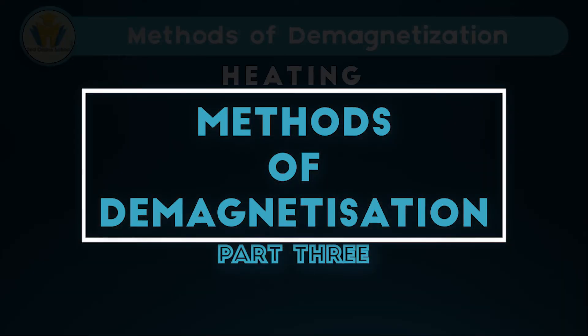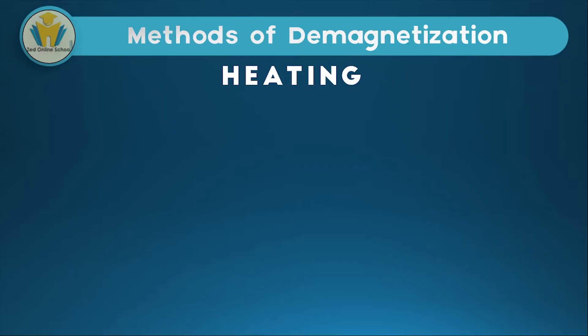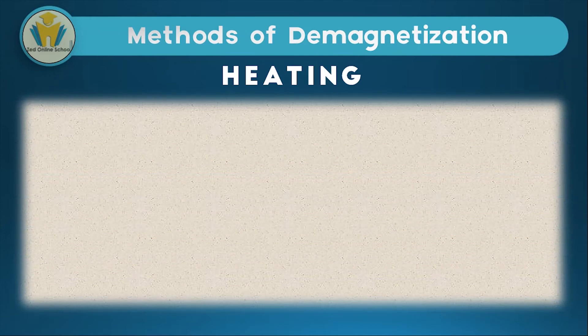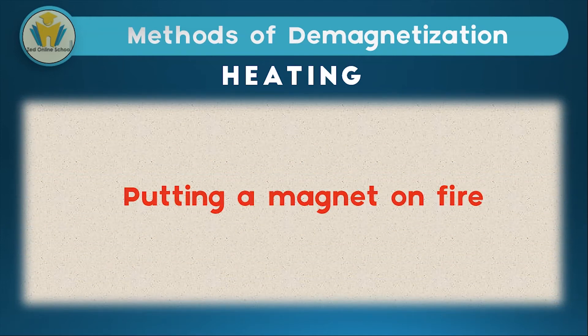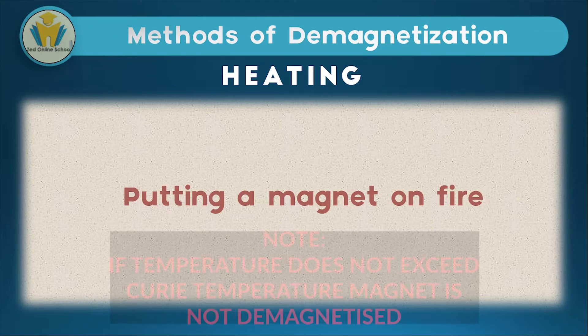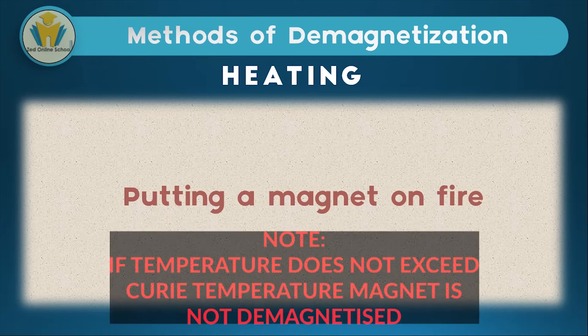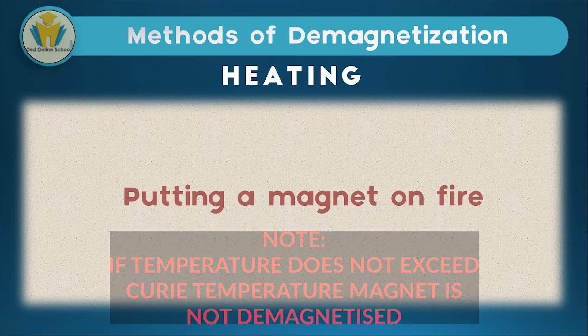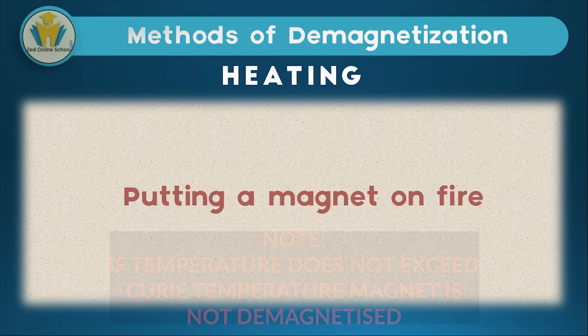Now we go to the methods through which we can demagnetize a material. The first kind is heating — getting a magnet and putting it on fire or introducing heat. After we do this, the temperature of that magnet will keep rising. It should be noted that the magnet will only get demagnetized once a certain temperature known as the Curie temperature is exceeded. If this temperature is not exceeded, the magnet will still remain a magnet; however, if it is exceeded, it ceases to be a magnet.